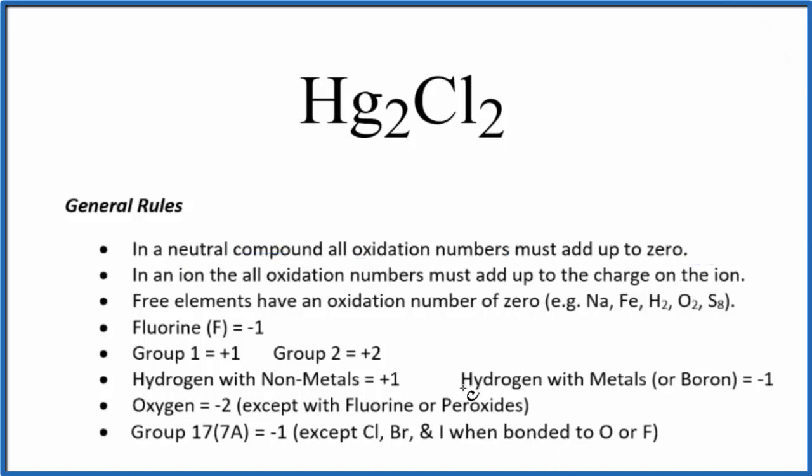We won't find mercury on our list here. Mercury is a transition metal, so we have to look at what it's bonded to to find out its oxidation number. Chlorine, that's in group 17, sometimes called 7a, and it's minus one almost all the time, just a few exceptions.